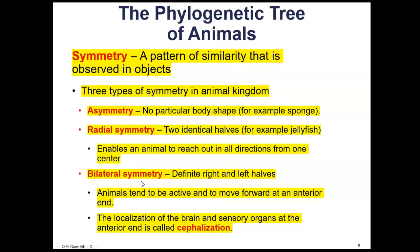Bilateral symmetry is what we see in humans — that is when you have definite right and left halves. All of the arthropods, including insects, spiders, crabs, and lobsters, have bilateral symmetry. There is only one way to cut the animal and get equal symmetrical halves. Animals with bilateral symmetry tend to be active and move forward at an anterior end — they tend to have a head region and a tail region. The localization of the brain and sensory organs at the anterior end is called cephalization, because cephalic means head.